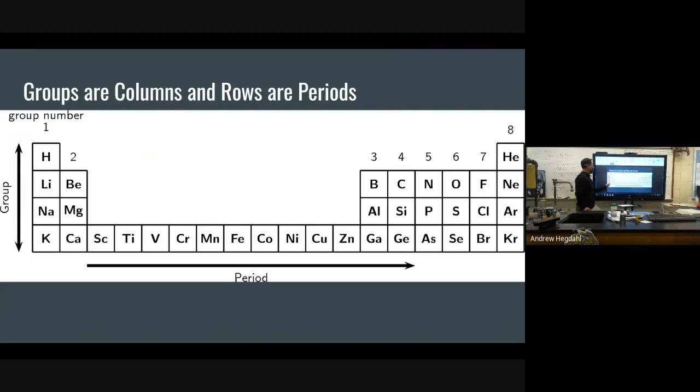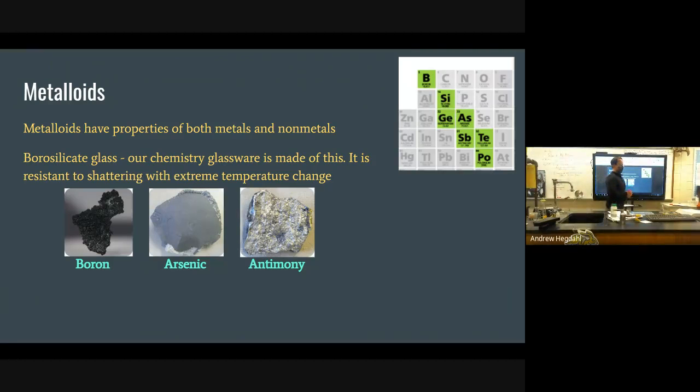Alright. So, columns on the periodic table are called groups. Rows are called periods. Elements in the same group have similar chemical properties, and we're going to talk about specifically four distinct groups that have four very distinct sets of properties. Before we talk about those groups, let's talk about metalloids. Metalloids are in between the section of the metals and the non-metals on the periodic table. We have metals and non-metals.